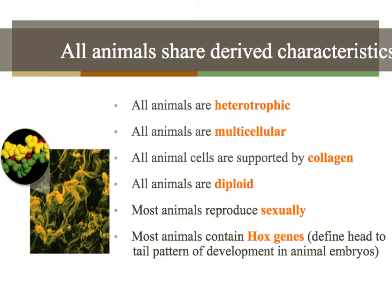Multicellular means they have or can contain more than one cell. There are some animals that just have one cell, like an amoeba. All animal cells are supported by something called collagen. All animals are diploid for the most part — that means they have a full set of chromosomes, one set from mom and one set from dad. Most animals reproduce sexually.